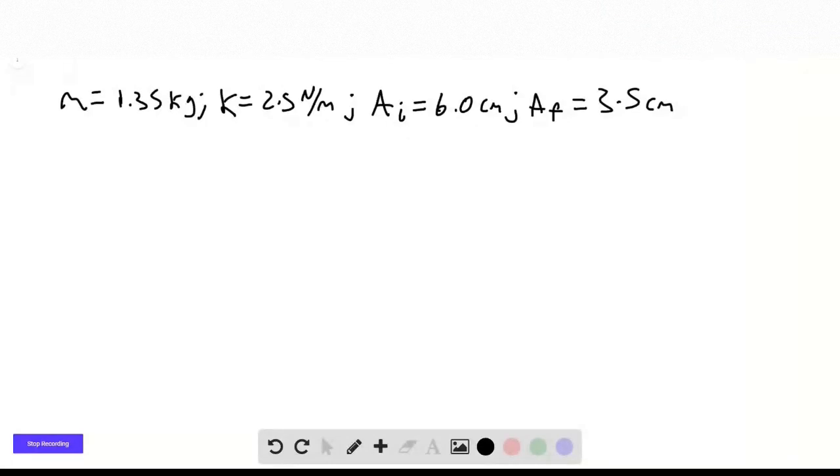All right, so in this problem we have a mass on a spring that oscillates to some initial amplitude of 6 centimeters and then after 8 cycles dies down to an amplitude of about 3.5 centimeters.